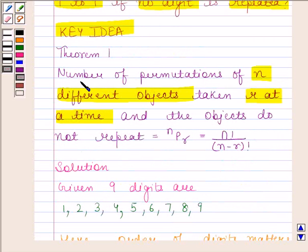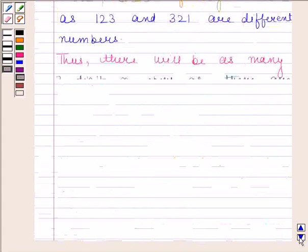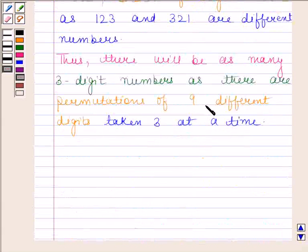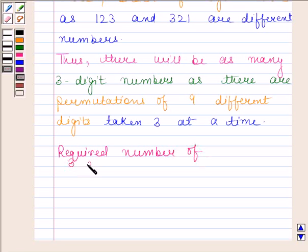By Theorem 1, we know that number of permutations of n different objects taken r at a time and the objects do not repeat is nPr. Now here, n different objects are 9 different digits and r is 3, since we have to form 3-digit numbers which are distinct. So, the required number of 3-digit numbers is equal to 9P3.